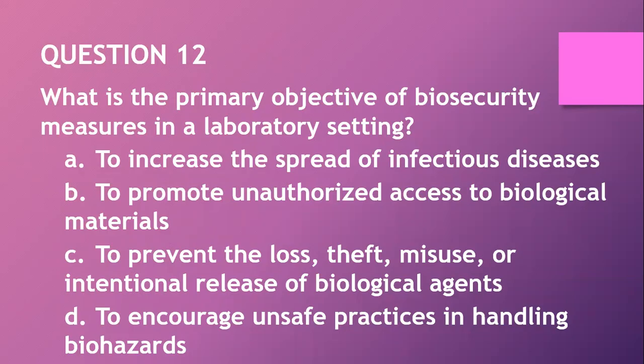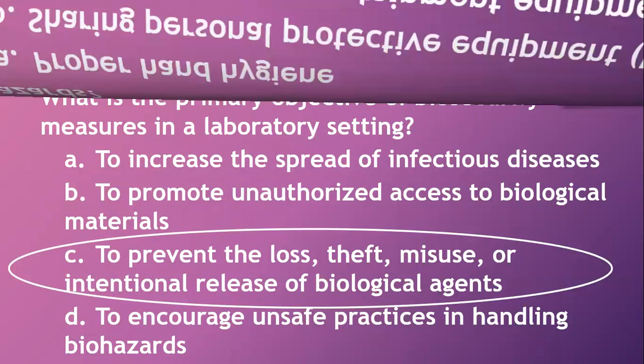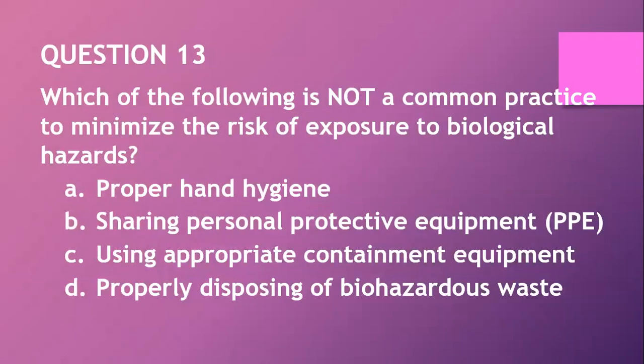Question twelve: what is the primary objective of biosecurity measures in a laboratory setting? Remember, biosecurity has to do with preventing intentional exposure or unauthorized access to pathogens. A. Increase the spread of infectious diseases. B. Promote unauthorized access to biological materials. C. Prevent the loss, misuse, or intentional release of biological agents. D. Encourage unsafe practices in handling biohazards. The answer is C.